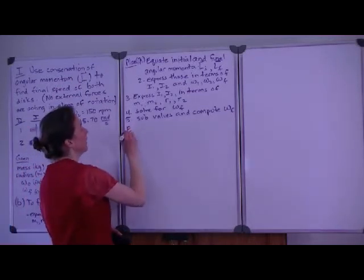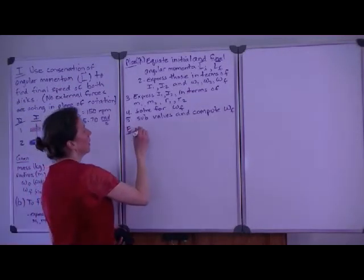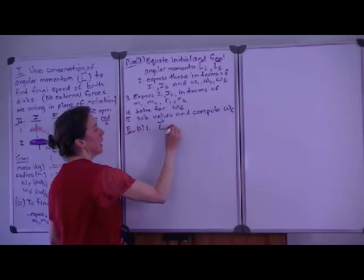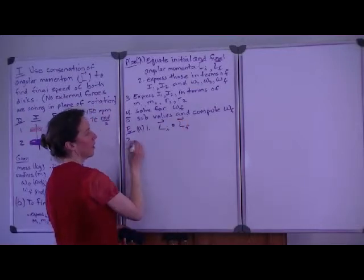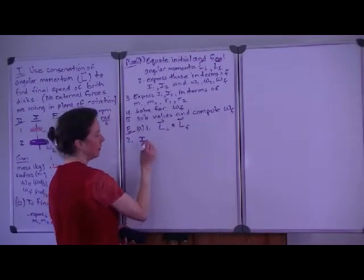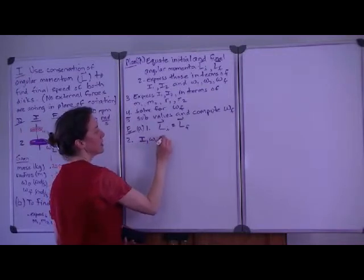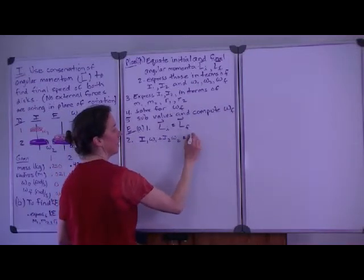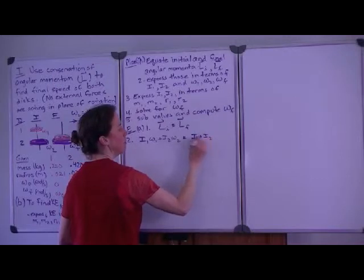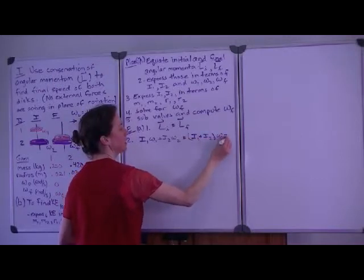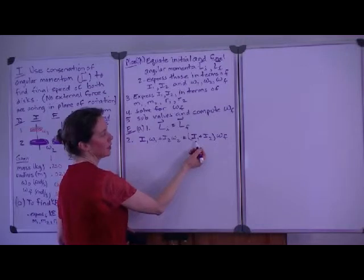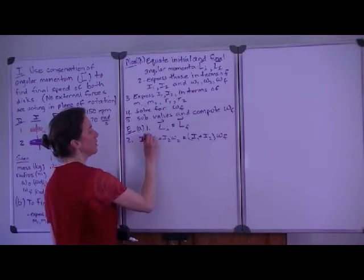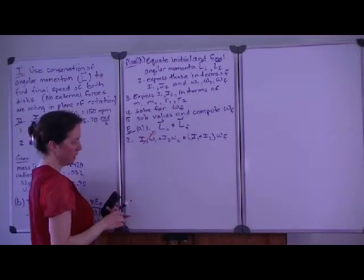So we're ready to evaluate this problem. In part A, we're going to equate the initial and final angular velocities. The initial angular velocity consists of the angular velocity of disk 1 and the angular velocity of disk 2. The final angular momentum is equal to the sum of the moments of inertia times the final speed because the two disks are acting as a single unit and they share an axis of rotation. Recall that the initial angular speed of disk 1 is 0 and so that term can go to 0.